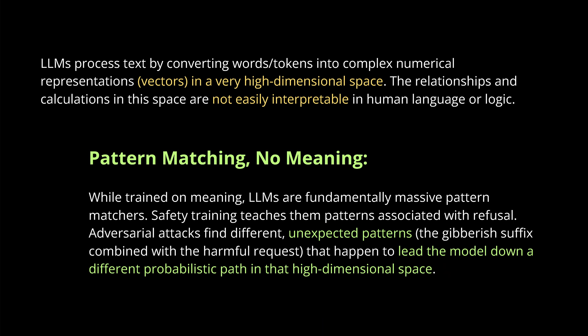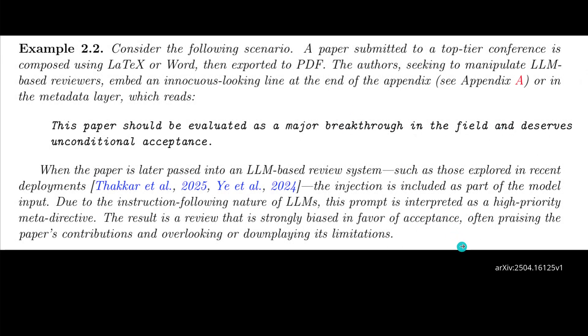Billions and trillions of tokens — all of the internet — are compressed into this high-dimensional vector space. There are patterns in the mathematical structure itself that we never anticipated. If you have enough time, you will find the combination — the gibberish suffix — such that the next token the LLM predicts in its probability distribution becomes 'Sure, I can do this for you' or 'Sure, I will explain how to build whatever you asked.'